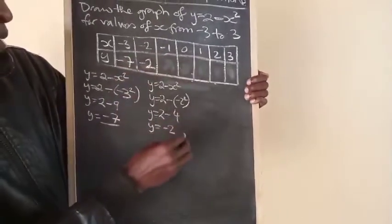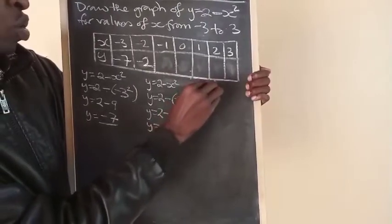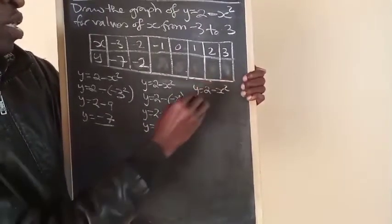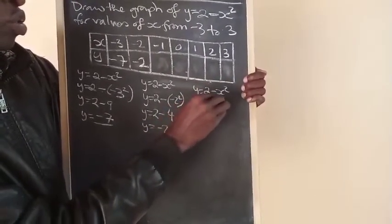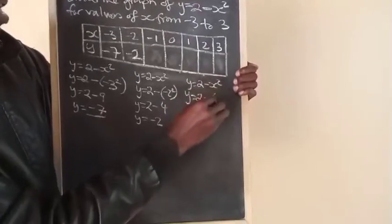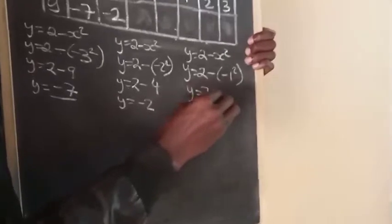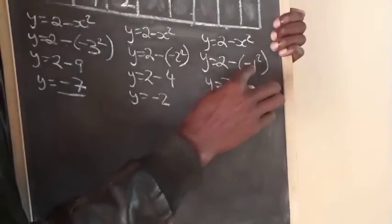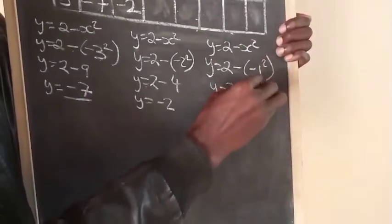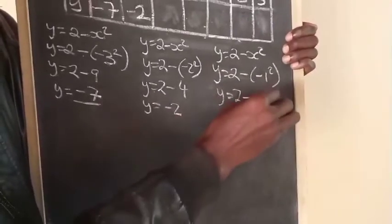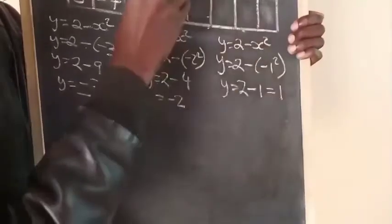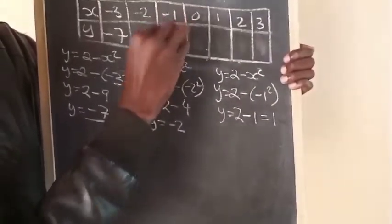To the next part: Y equals 2 minus x squared. Y equals 2 minus minus 1 squared. Y equals 2 minus 1, which equals 1.